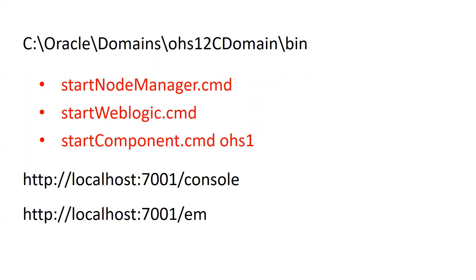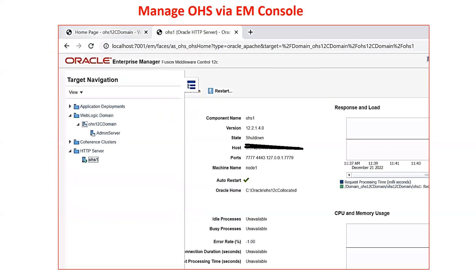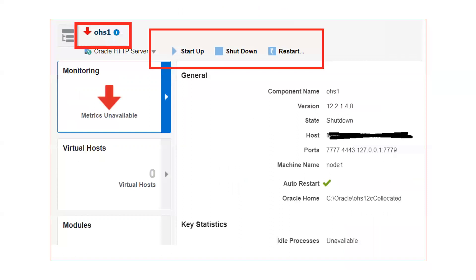Then test your admin console, and test the EM console by accessing the listen address and port followed by /console for admin console and /em for the EM tool — the fusion middleware control tool. Once you log into your EM tool, you will see the screen. Click on the navigation tool on the left side and you can see the domain with the admin server, a Coherence cluster, and the HTTP server named OHS1. Clicking on OHS1 shows the Oracle home, ports, URL, current status, and many other parameters on the right side.